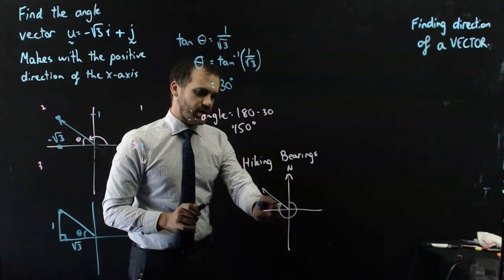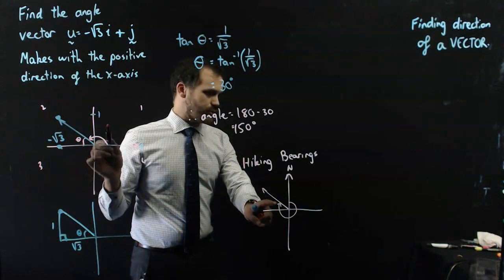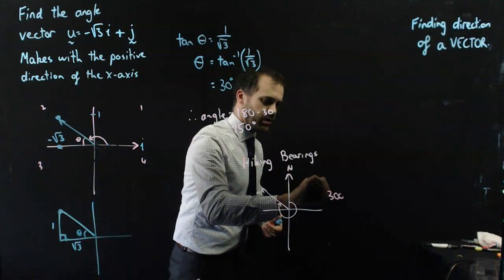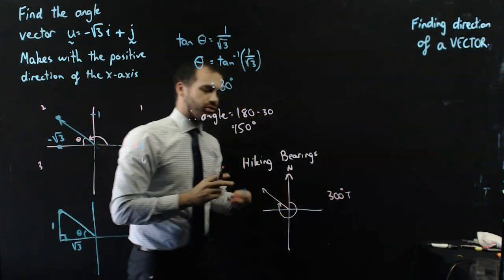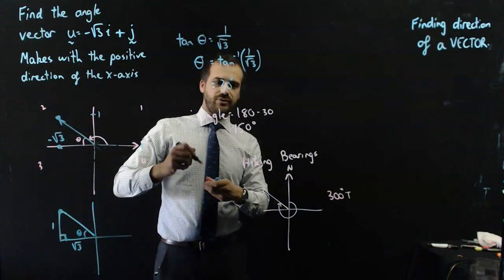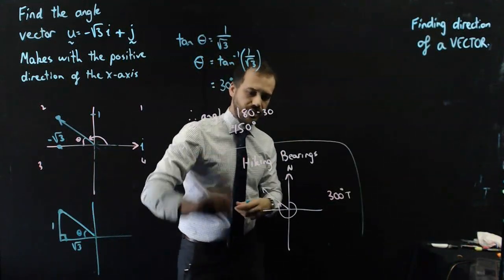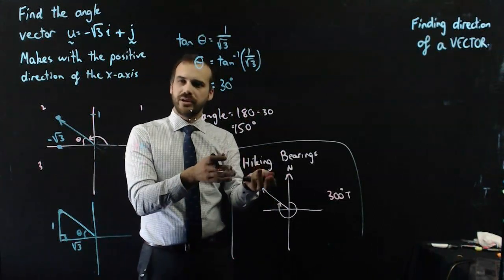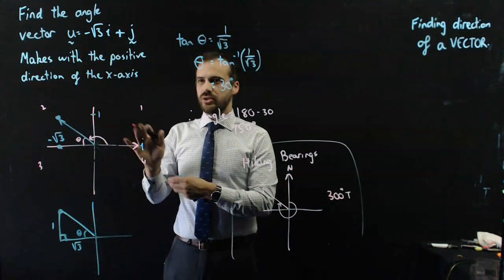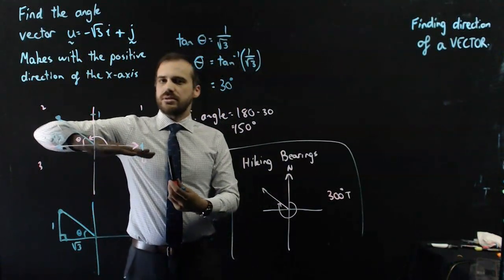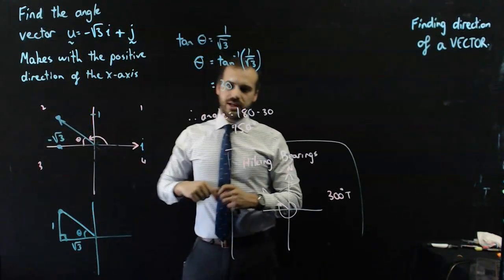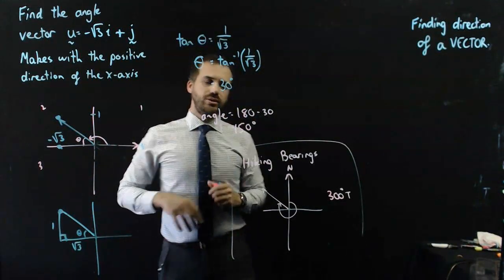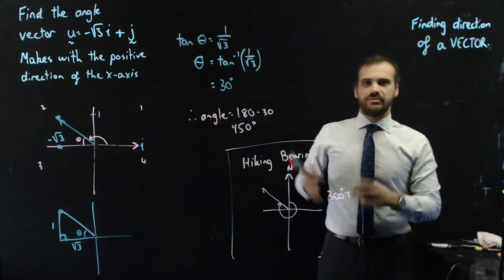which would be 270, plus the reference angle, which was 30. The answer would be 300 degrees, what we call 300 degrees true. So, two different styles of question. It could be a hiking question, where you're being asked true north, what bearing. It could also be the more standard sort of vector question, what angle does it make with the positive direction of the x-axis. But your answer is always the same. Draw it up, consider it as a triangle, and then deal with it using trig the tan ratio.